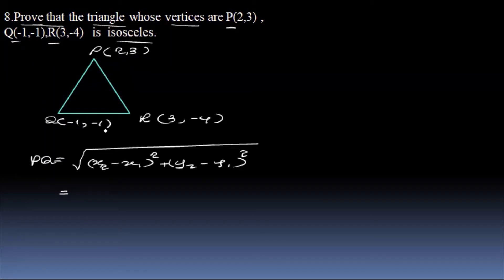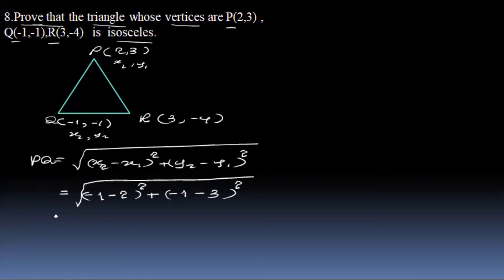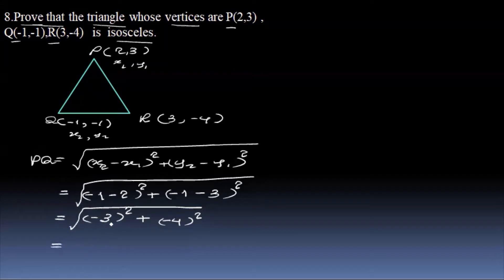So x1, y1 and x2, y2. We have x2 minus x1: minus 1 minus 2, the whole square, plus y2 minus y1: minus 1 minus 3, the whole square. So minus 1 minus 2 gives minus 3, the whole square, plus minus 1 minus 3 gives minus 4, the whole square.